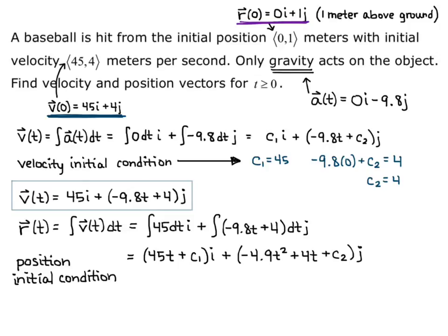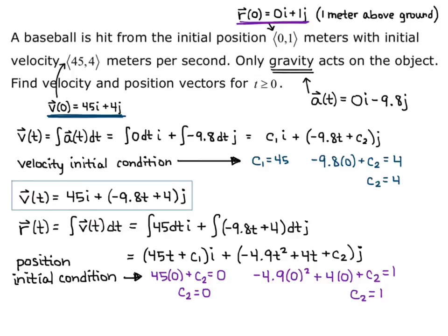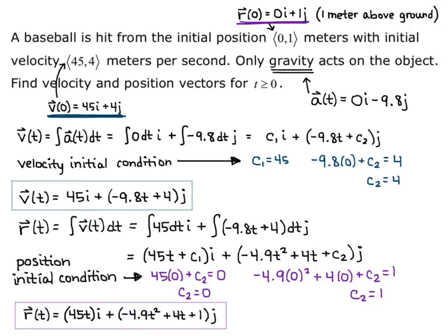Applying the position initial condition r(0) = 0i + 1j: from the i component, 45(0) + c1 = 0, so c1 = 0. From the j component, −4.9(0)² + 4(0) + c2 = 1, so c2 = 1. Plugging in, our position vector is r(t) = 45t·i + (−4.9t² + 4t + 1)·j.